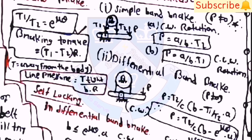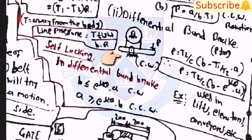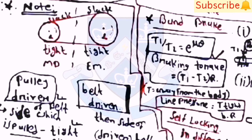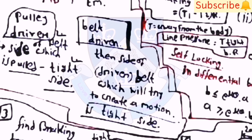For band brake: T1/T2 = e^(mu·theta), braking torque = (T1 − T2)·R, and line pressure = T_tight/(b·R). Note: for self-locking in differential band brake — b ≤ e^(mu·theta)·a for clockwise rotation, and a ≥ e^(mu·theta)·b for counterclockwise. For simple band brake: P = (a/b)·T2 and P = (a/b)·T1 for counterclockwise rotation. For differential band brake: P = (T2/c)·(b − T1/T2·a) and P = (T2/c)·(b − e^(mu·theta)·a). Applications include lifts, elevators, and conveyors.